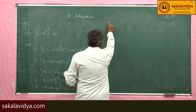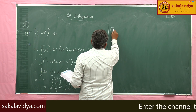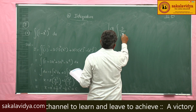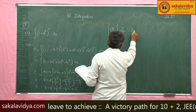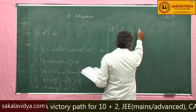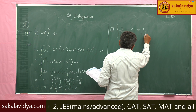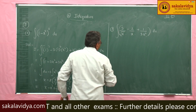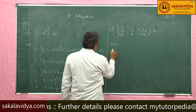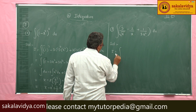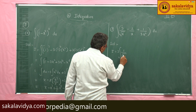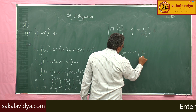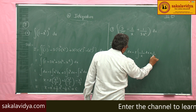Next problem: evaluate the integral of (3/√x - 2/x + 1/3x²) dx. So I equals 3 times the integral of 1/√x dx minus 2 times the integral of 1/x dx plus 1/3 times the integral of 1/x² dx.